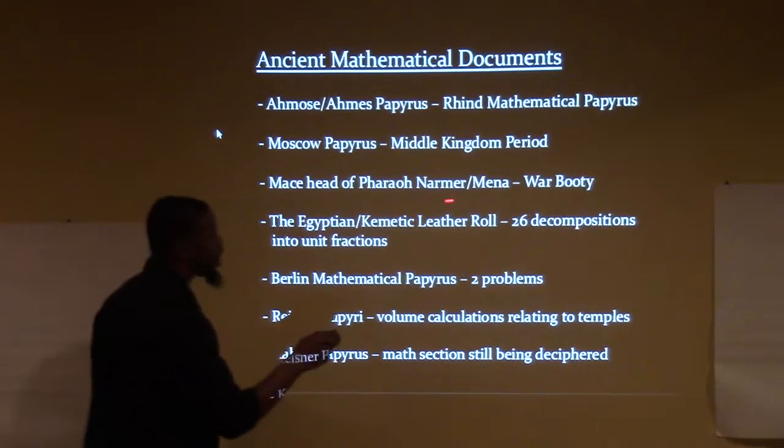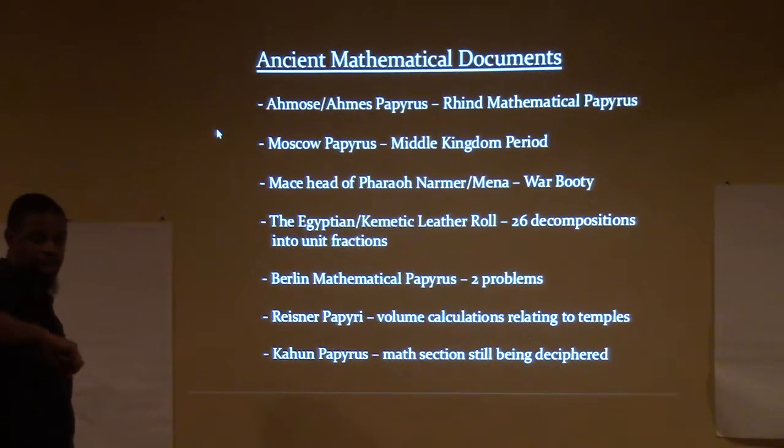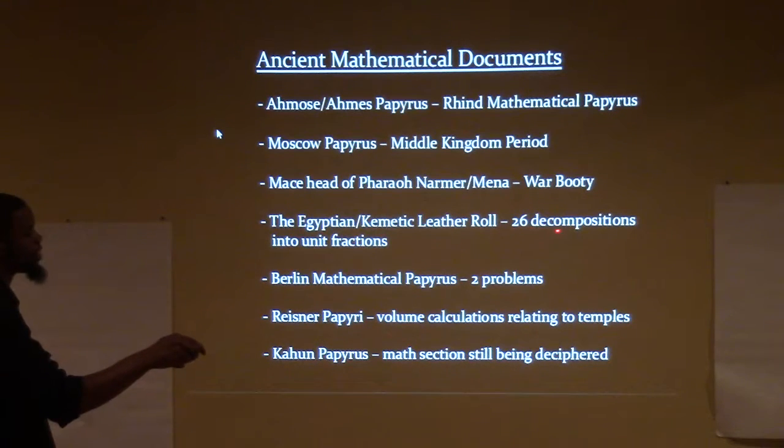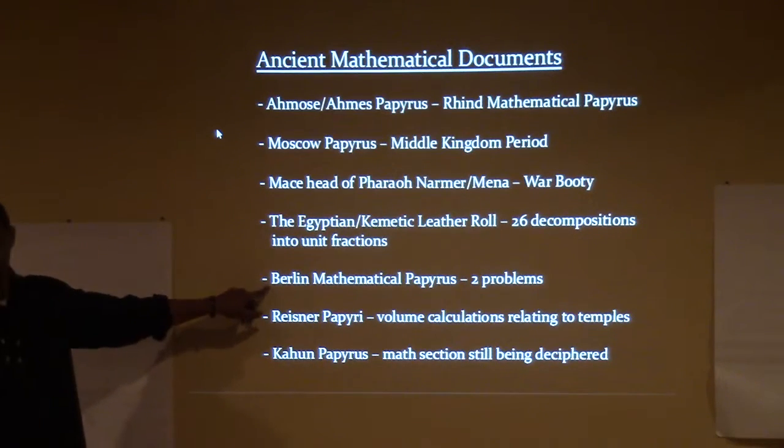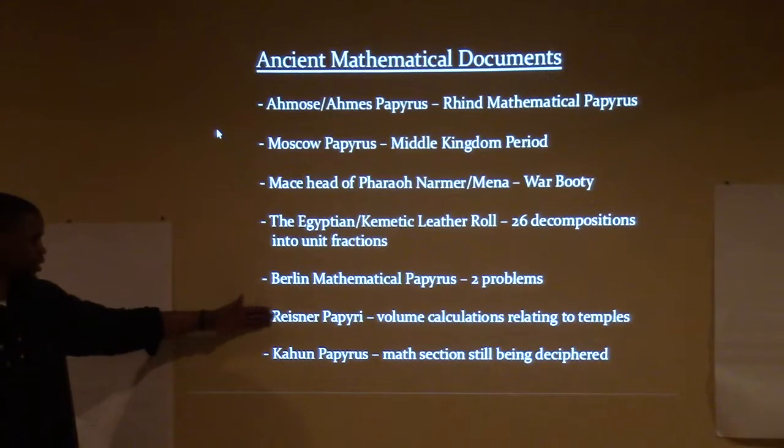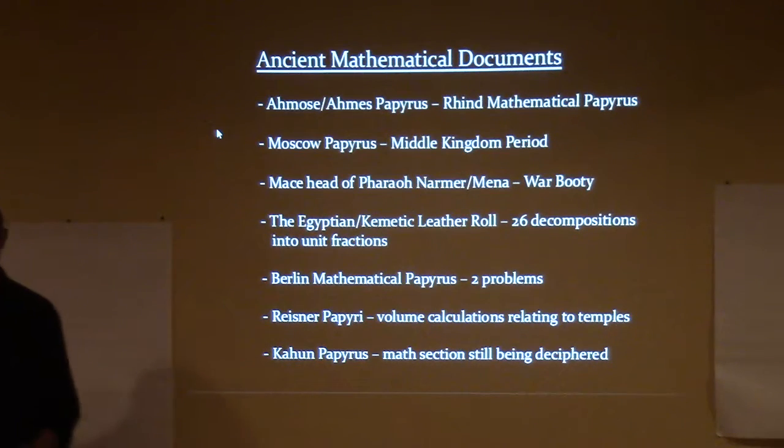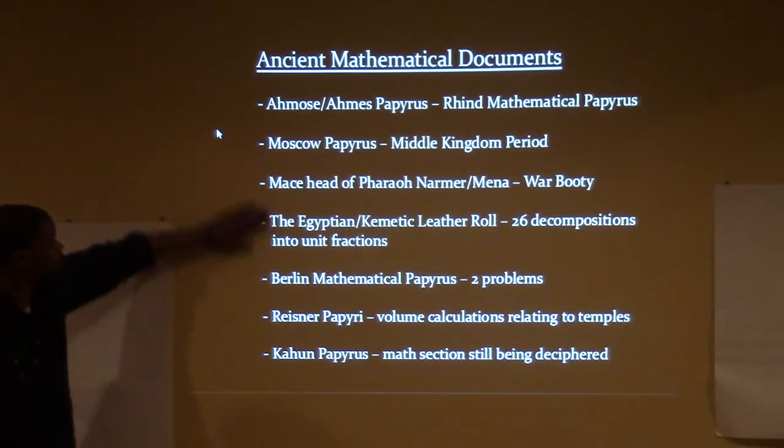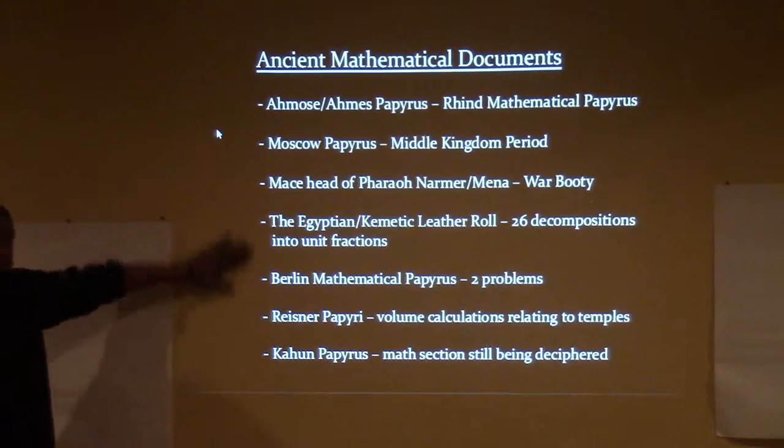At the base head of Pharaoh, the first brother who united the upper kingdom and lower kingdom together. You got the Egyptian Hermetic leather roll with 26 decompositions of unit fractions right here. The Berlin, another one we've got to rename. The Berlin Papyrus with two problems on it. The Reisner, I don't even know who that is. We'll get him out of there. And the Kahun Papyrus, I believe that was the city, one of the first cities that were planned as far as the engineering. But all these right here are your early evidence documentation relative to mathematics.